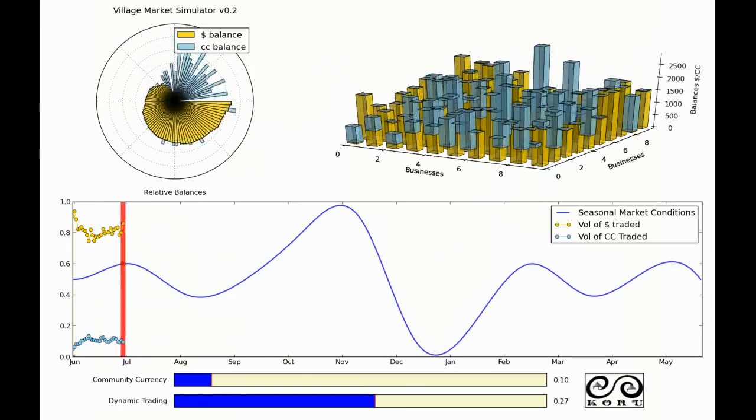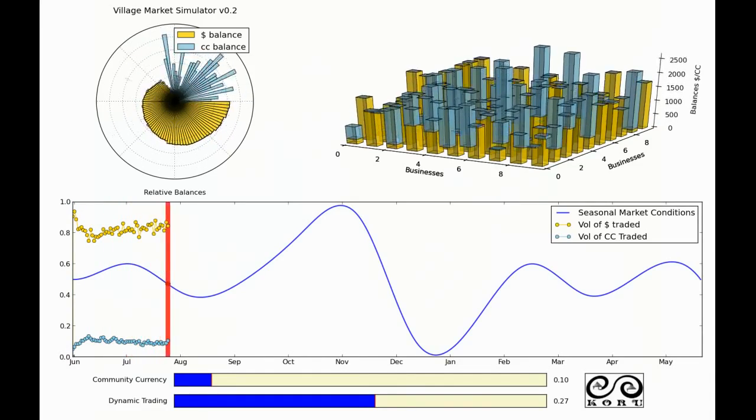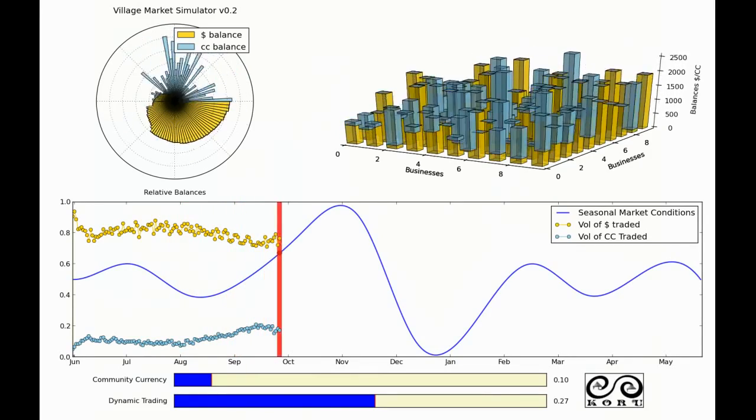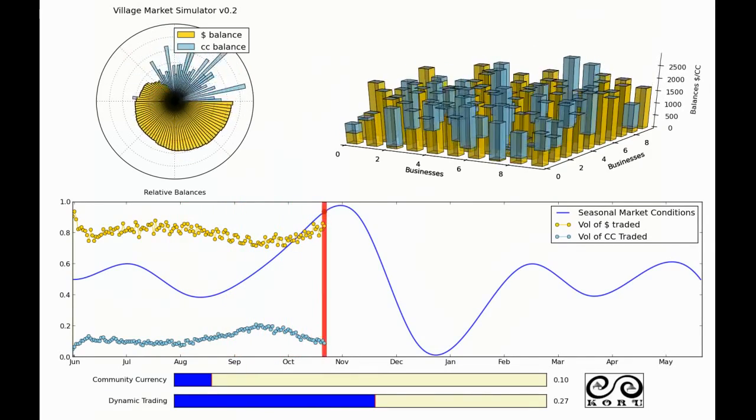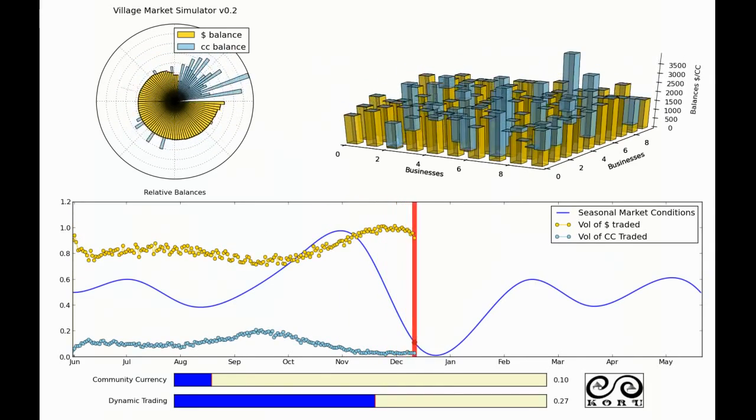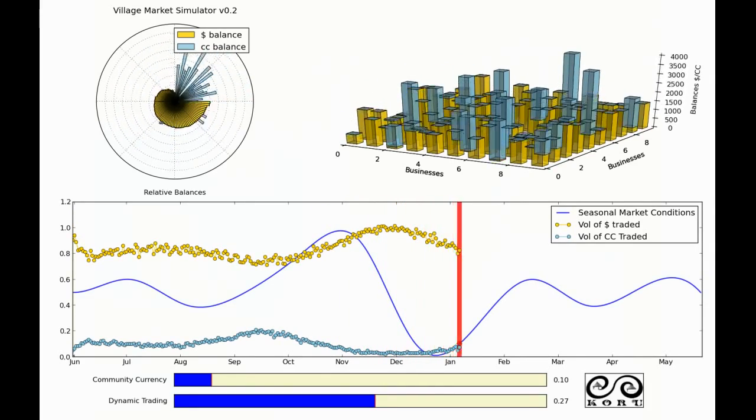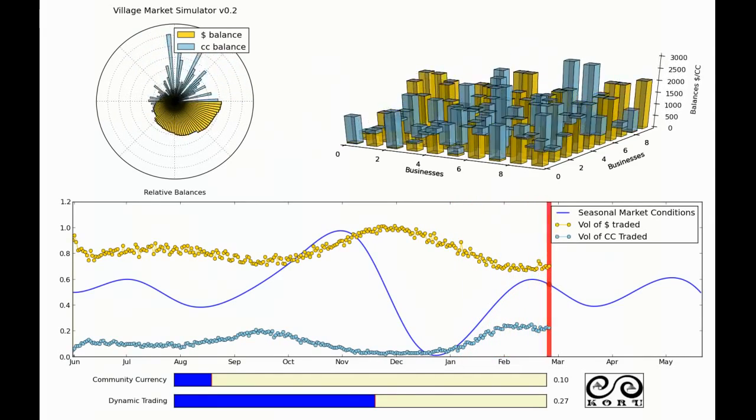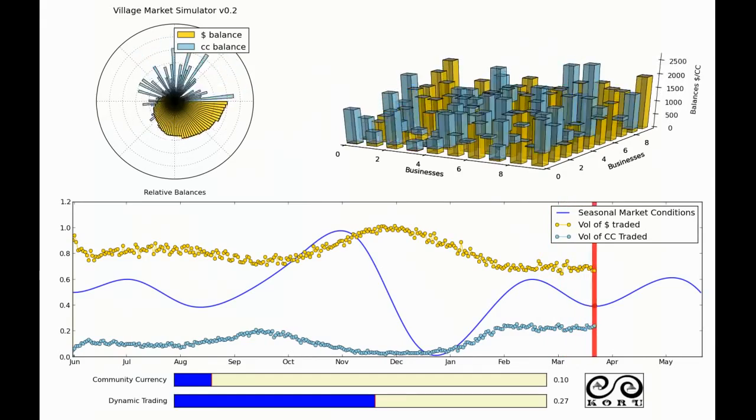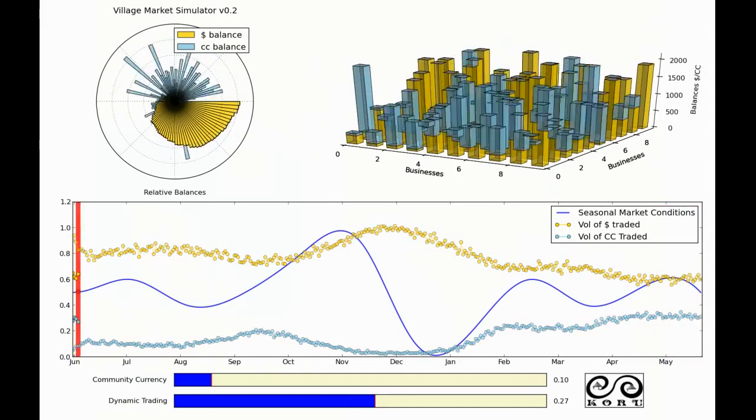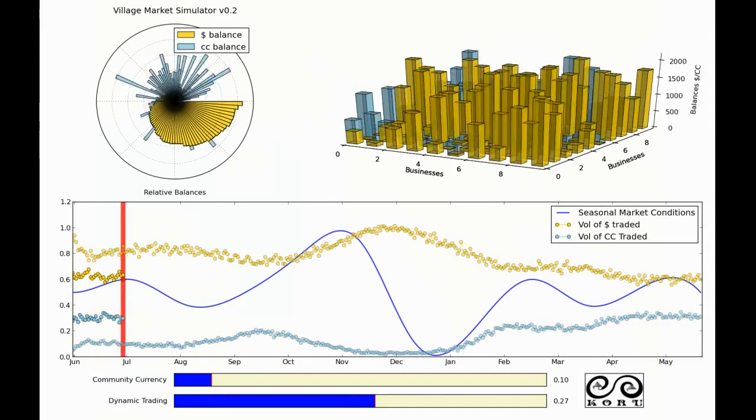So what we're going to do as a solution to this is introduce a second currency. This second currency is in some ways similar to the Swiss not buying into the euro. They kept their Swiss franc so that they would have some more market stability and not be totally dependent on the euro. So on the top here is the national currency and the bottom in blue is community or local currency.